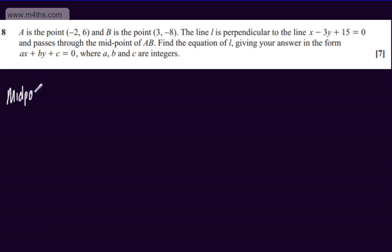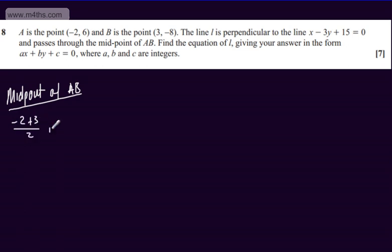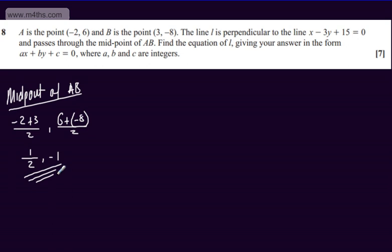So the midpoint of AB: we add the x's together and divide by 2 and then we add the y's together and divide by 2. So we'll have minus 2 plus 3 divided by 2 and 6 plus minus 8 divided by 2. This gives me positive 1 half and then minus 1. So this is a point that it goes through.